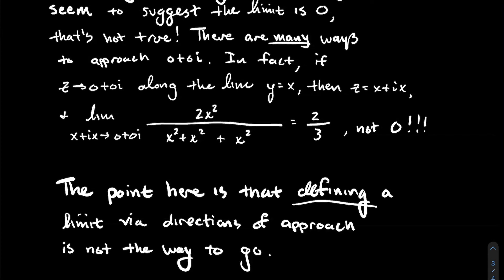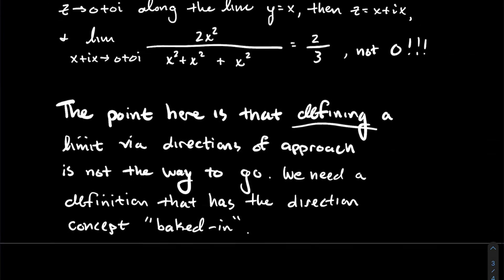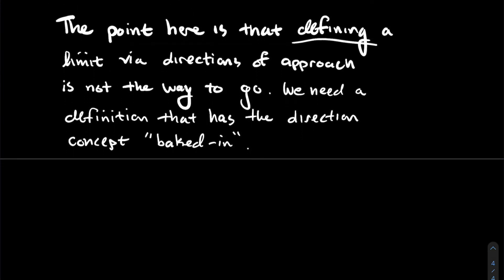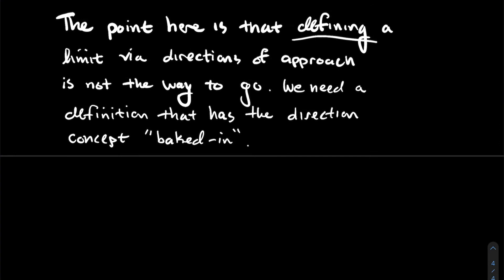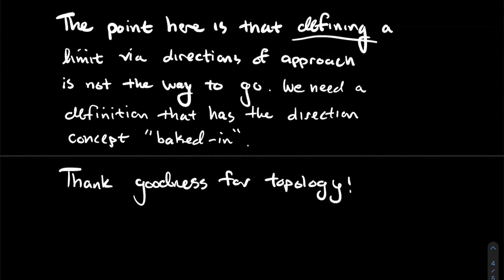What we need then is a definition that has the concept baked in — one where I don't have to spend time checking all these directions and worrying about whether some direction I didn't think about would give me a different number. So how do I do that? The answer is: thank goodness for topology. You've probably seen the epsilon-delta definition of what does it mean to say that the number L is the limit as x approaches A of f of x.